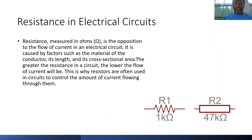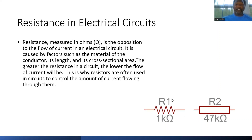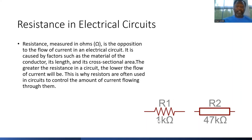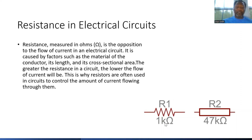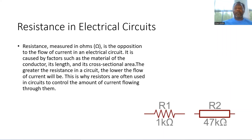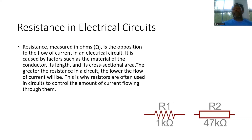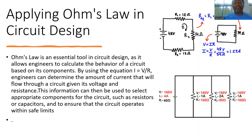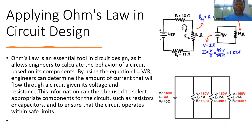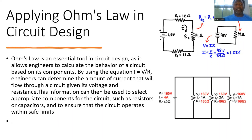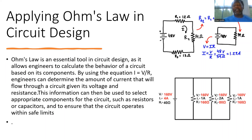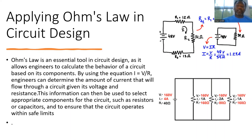Resistance in electrical circuits is measured in ohms. For example, a 1,000-ohm resistor is denoted 1k (lowercase k), and a 47,000-ohm resistor is 47k. Using the equation current equals voltage divided by resistance, engineers can determine the amount of current that will flow through a circuit at any given voltage.